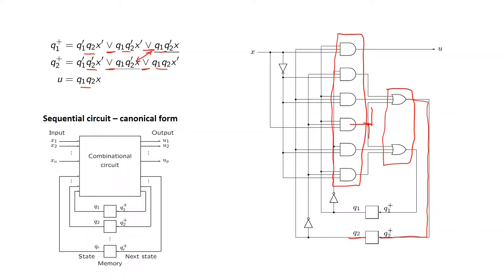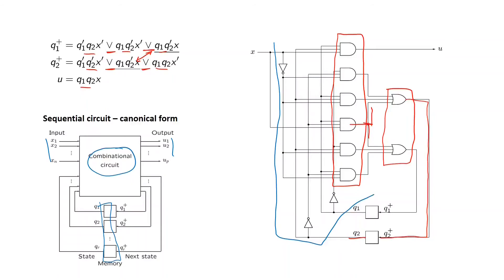We can also compare this to our canonical form of the sequential circuit, where we had a set of inputs, a set of outputs, a combinational circuit, and our memory elements. The combinatorial circuit is the part that takes X, Q1, and Q2 as inputs and produces U, Q1-plus, and Q2-plus as outputs. Our memory elements will be the two D flip-flops that we have here. Thank you very much.